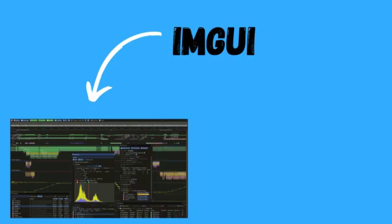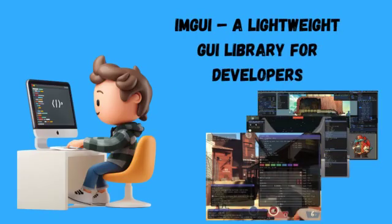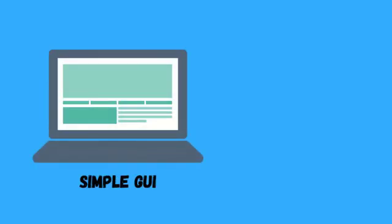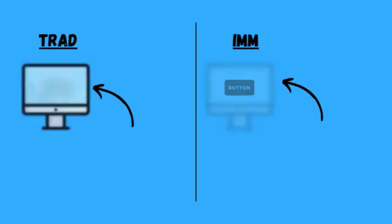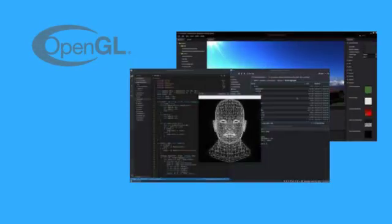Next, Dear ImGui. This one's totally different from Qt — it's super lightweight, insanely fast, and perfect for things like in-game tools, editors, or dashboards. You don't build windows like you do in traditional GUI libraries. Instead, you basically just write C++ code that says "draw this button here every frame." It's like a GUI that works more like OpenGL.